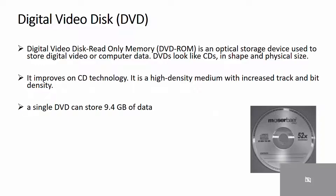DVDs. The full form of DVD is Digital Video Disk. Digital Video Disk ROM is an optical storage device used to store digital video or computer data. DVDs look like CDs in shape and physical size, but improve on CD technology. It is a high-density medium with increased track and bit density. A single DVD can store 9.4 GB of data.